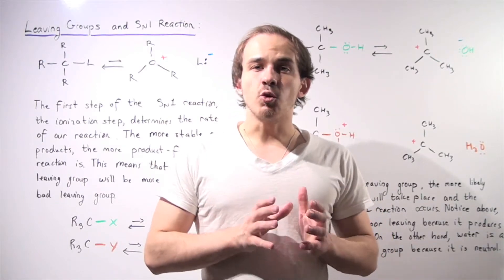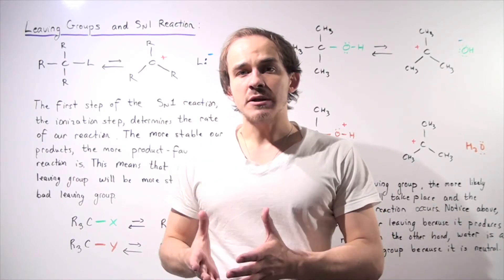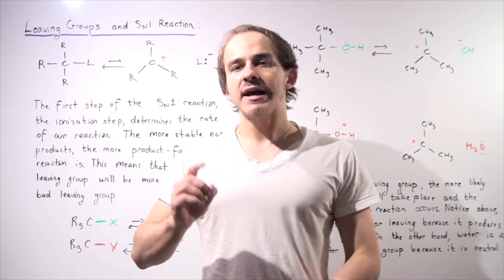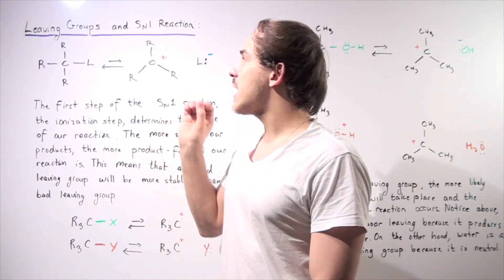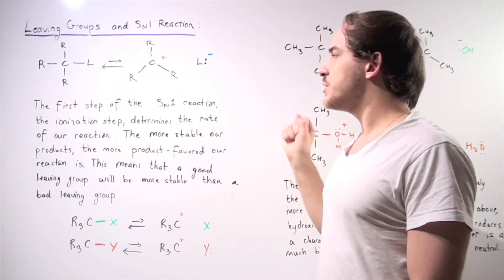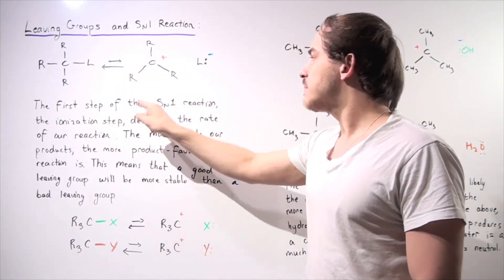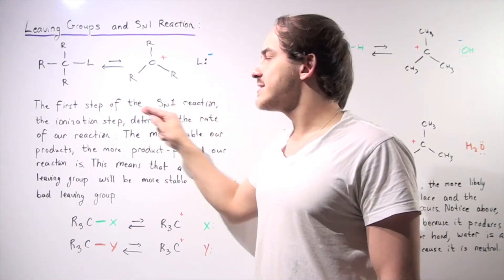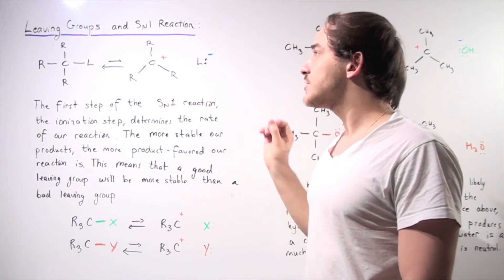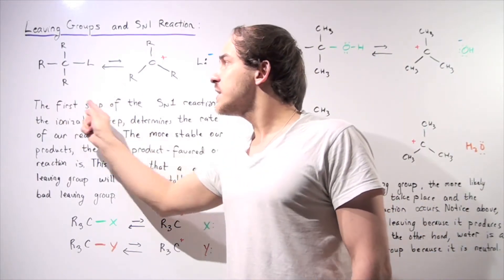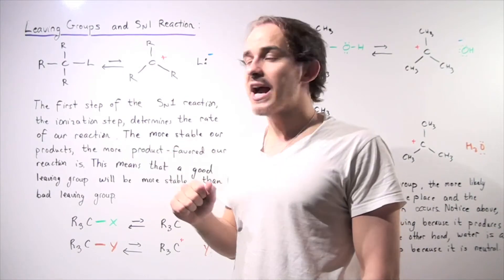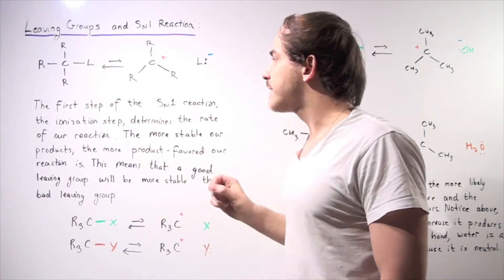Let's examine how the leaving group found on our substrate affects our SN1 reaction. The first step of the SN1 reaction is known as the ionization step, and this ionization step determines the rate of the reaction. In other words, the more of this substrate we have, the higher our rate; the less we have, the lower our rate.